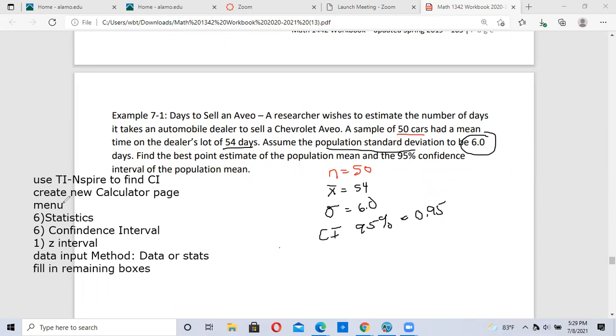We're going to use our TI-Nspire calculator. First, create a new calculator page, press the menu button, number 6 statistics, number 6 confidence interval, then number 1 Z interval. If you have individual pieces of data, select data. If you don't have individual pieces of data, select stats. Then fill in the remaining boxes.